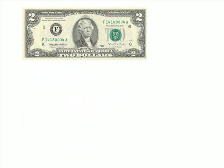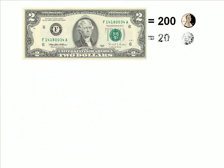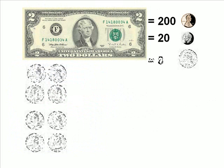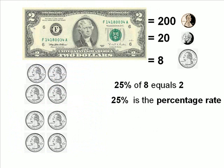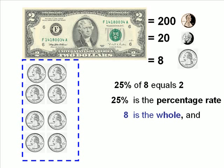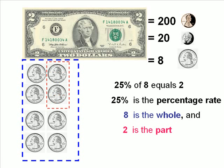Let's look at another example — a two dollar bill, which is equivalent to 200 pennies, 20 dimes, or eight quarters. So 25% of eight equals two. 25% is again the percentage rate. Eight is the whole and two is the part.